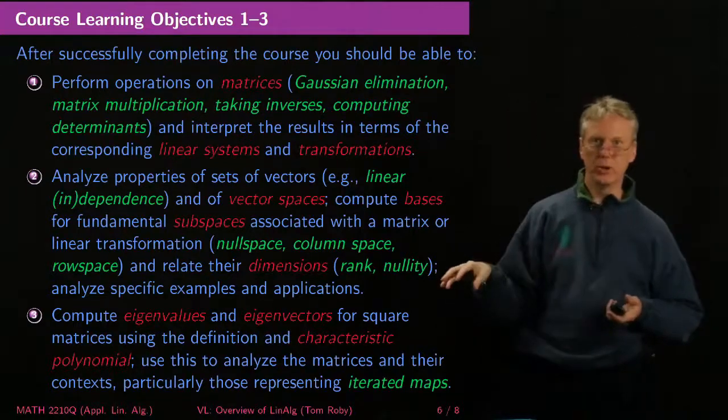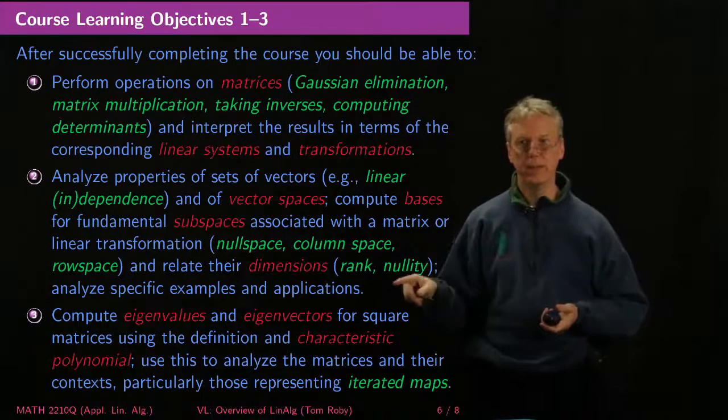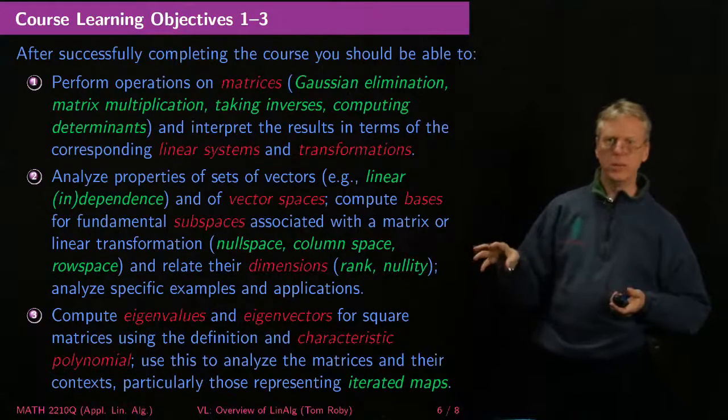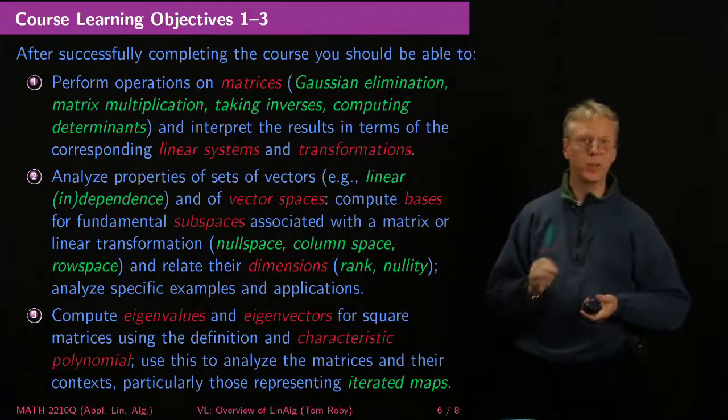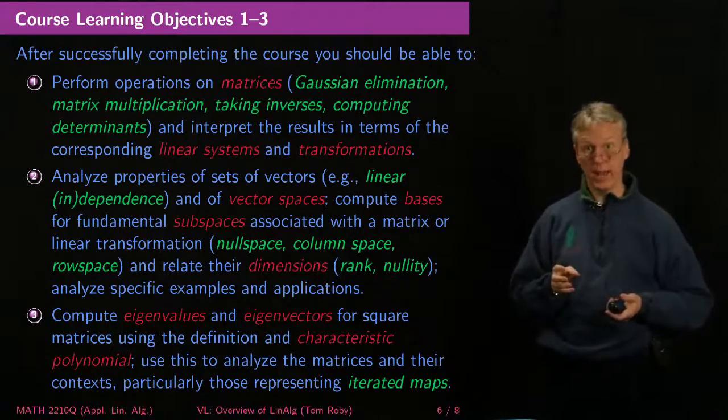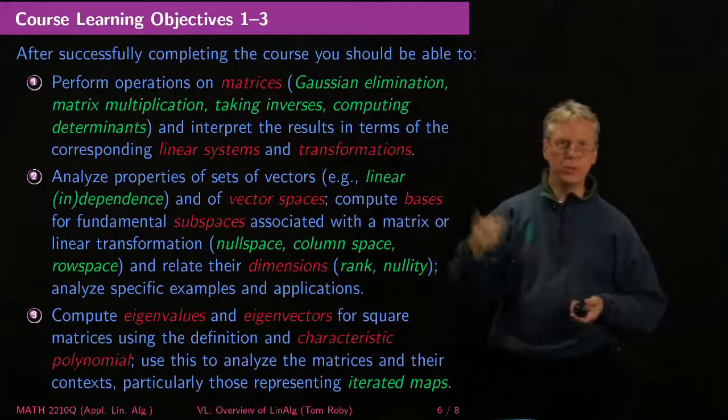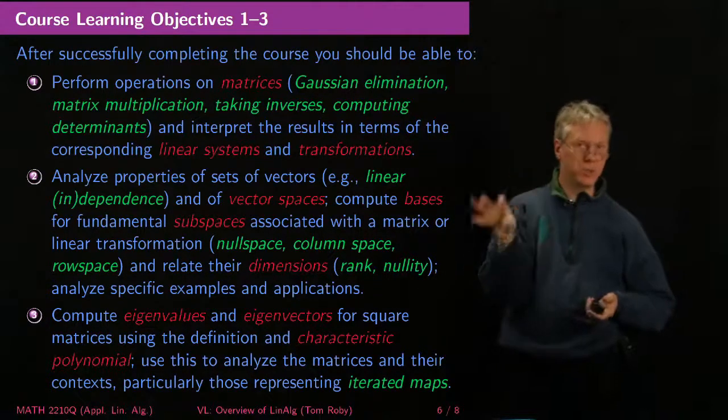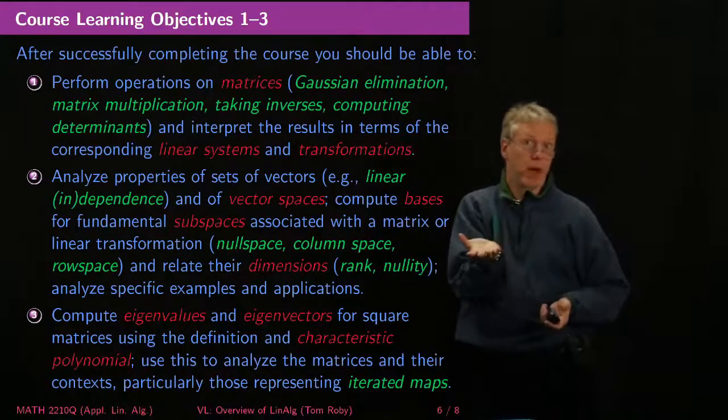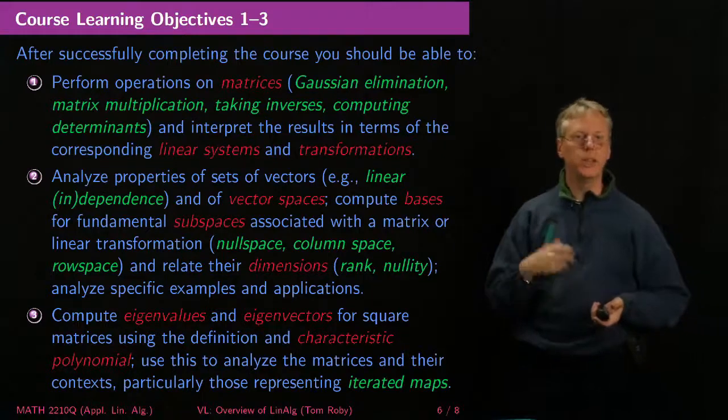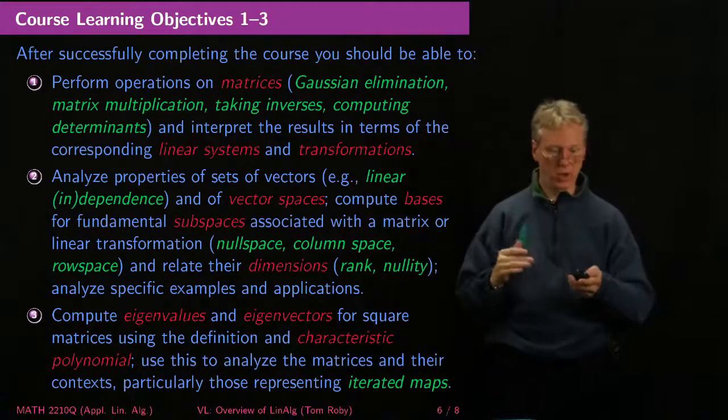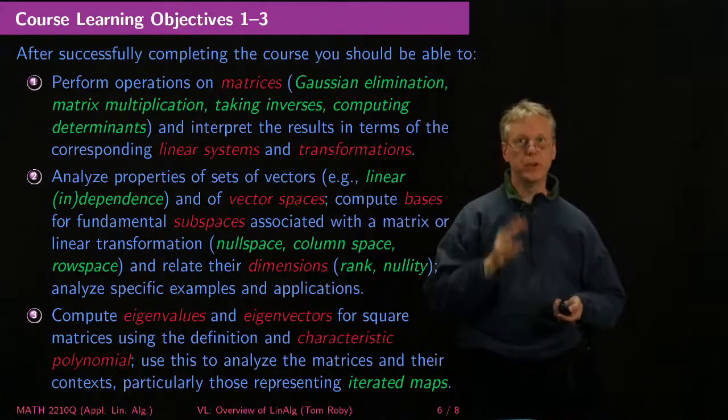There's a special way they're related by the rank nullity theorem, which you'll see. And then another chunk of the course will be eigenvalues and eigenvectors are things you might have even heard already. They're an incredibly powerful tool for understanding how square matrices act. And particularly it's useful when you're iterating a map over and over again that tells you about a certain process that might happen month by month or day by day, hour by hour even. But if it's iterated, then understanding what happens in the long term usually depends heavily on the analysis of its eigenvalues. So those are the first three. There are eight in total.